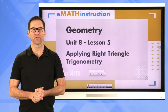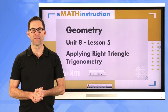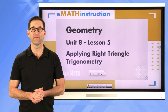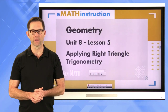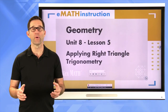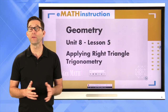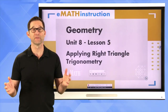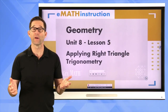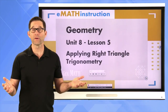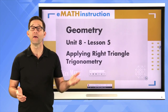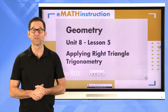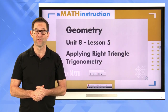Hello and welcome to another geometry lesson by EMath Instruction. My name is Kirk Weiler and today we'll be doing Unit 8, Lesson 5 on Applying Right Triangle Trigonometry. Up until this point we've used right triangle trigonometry to really do two things: to solve for missing angles and to solve for missing sides in right triangles. Today we're going to get more practice on that, but in the context of real world problems.